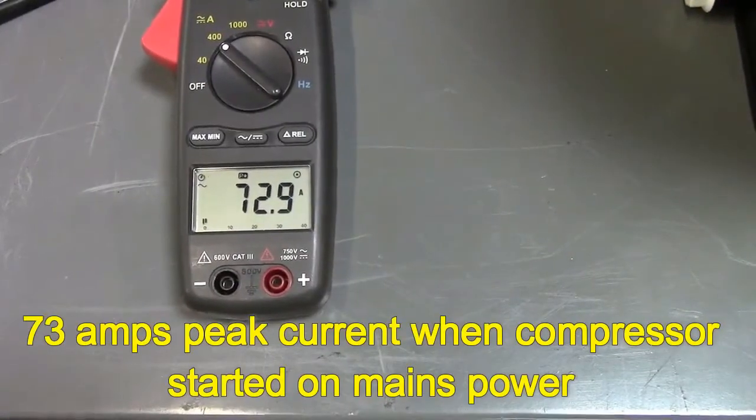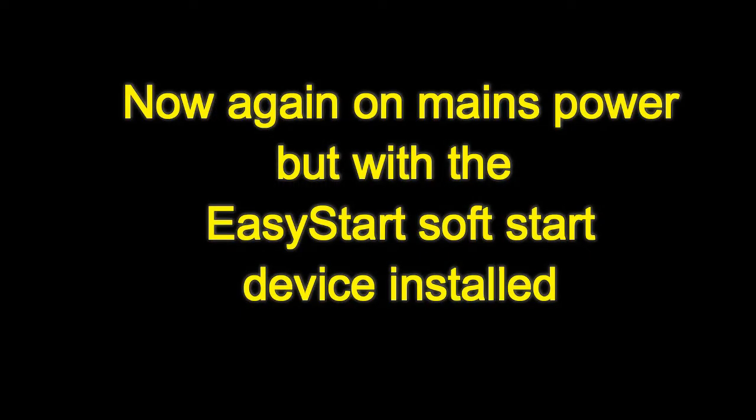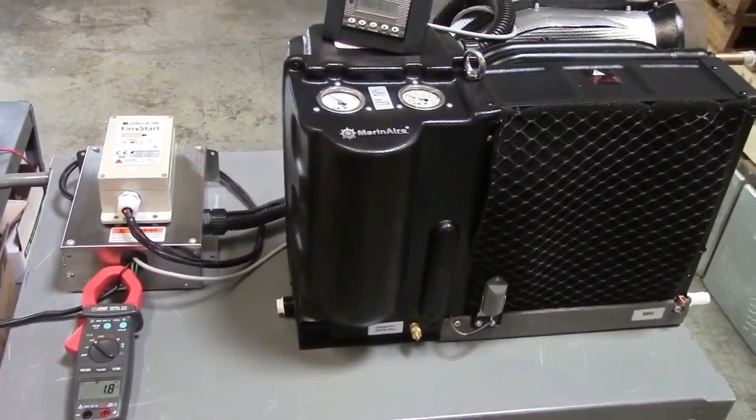It's going to be a lot higher than that once it gets going. When the compressor starts, we get 72.9 amps, so 73 amps.